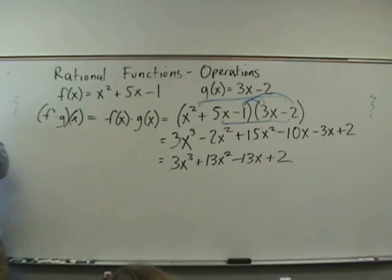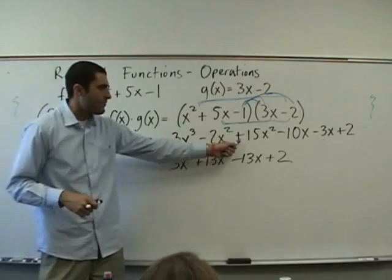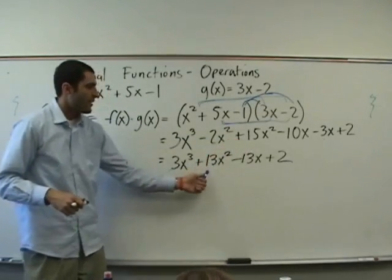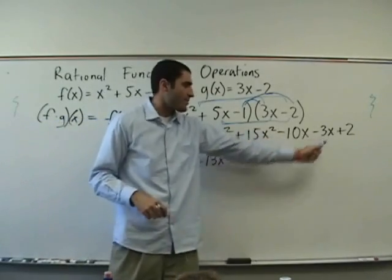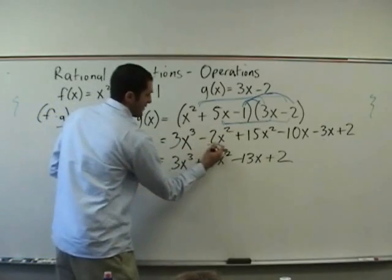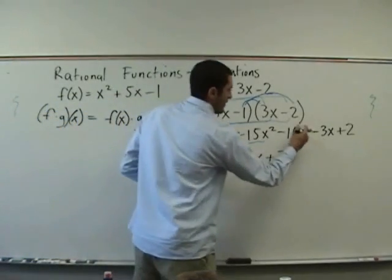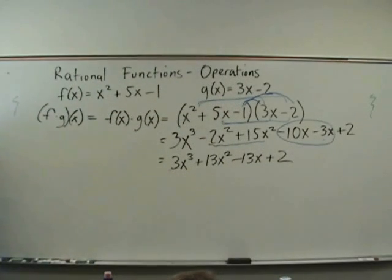Wait. How is it plus 13? Plus 13x squared. Negative 2x squared plus 15x squared makes 13x squared. And then same in similar fashion. Negative 10x minus 3x. Negative 13x. Combining like terms. Okay. This is one combination. And this is another.